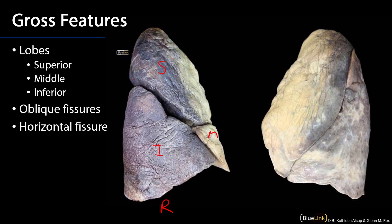Between the superior lobe and inferior lobe, and between the inferior lobe and the middle lobe, is the oblique fissure, and between the middle and superior lobe is the horizontal fissure. The left lung typically only has superior and inferior lobes separated by an oblique fissure.